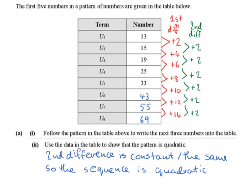So the first differences are 2, 4, 6, 8, 10, 12, 14. The second difference is constant at 2 each time.